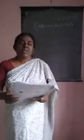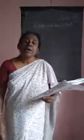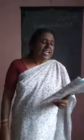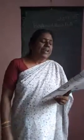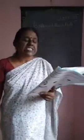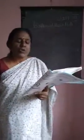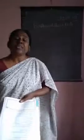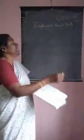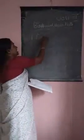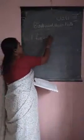Next is fill in the blanks. The tailor bird makes its nest out of two or three large leaves. The answer is leaves.